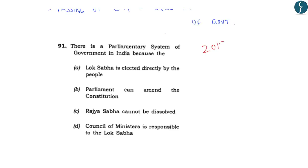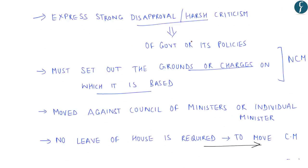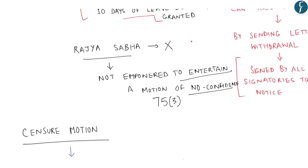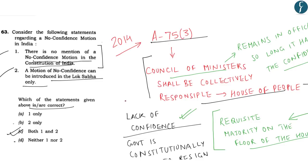Another question asked in 2015: 'There is a parliamentary system of government in India because — Lok Sabha is elected directly by the people; parliament can amend the constitution; Rajya Sabha cannot be dissolved; and council of ministers is responsible to the Lok Sabha.' We know that under Article 75.3, council of ministers is responsible to the Lok Sabha. Hence, this is the correct answer. Parliamentary system of government and issues related to it, including no confidence motion, are important topics from the prelims point of view.